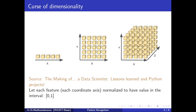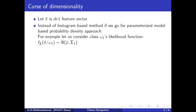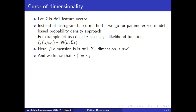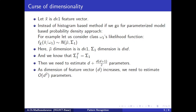To reduce this complexity and the requirement for training data, we try to approximate our likelihood functions using functions that can be represented with fewer parameters. For example, most practical distributions can be approximated roughly as jointly Gaussian with mean μ̄ and covariance matrix Σ. When x̄ is a d×1 feature vector, we require d + d(d+1)/2 parameters. As d increases, the number of parameters grows at the order of d².